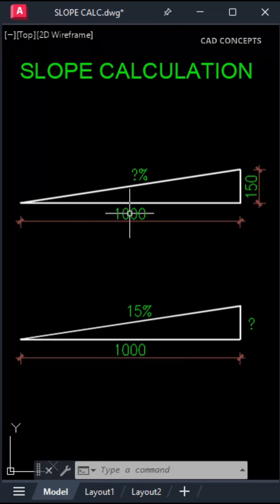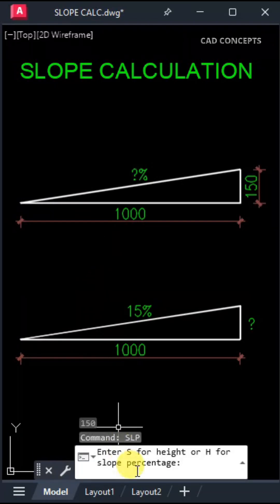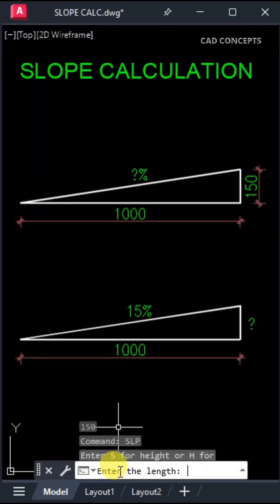This length we have and height we have, but slope percentage we are not getting. We will identify how much slope percentage we have. Type SLP, press S to get your slope percentage.